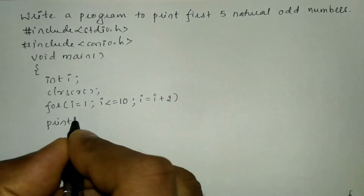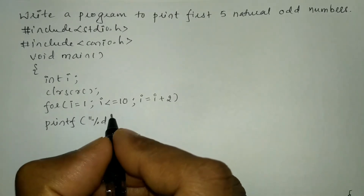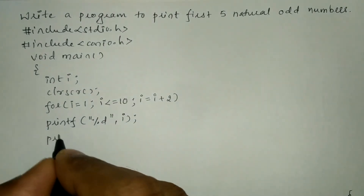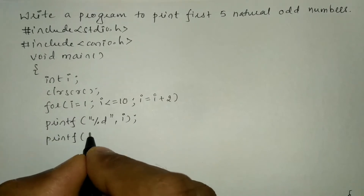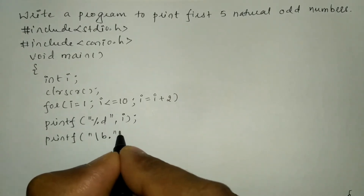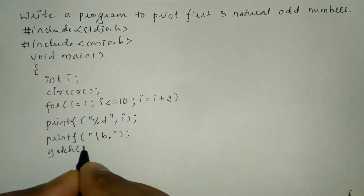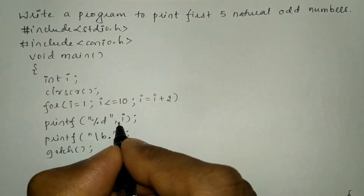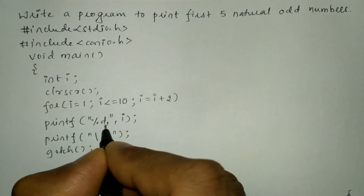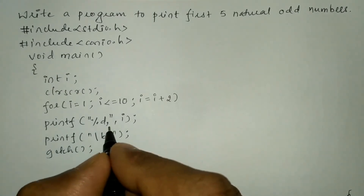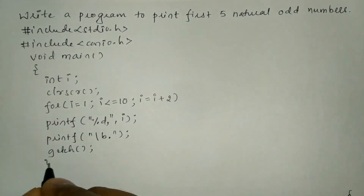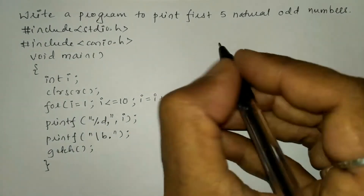Next I'm going to write a printf statement. In double quotation marks write the percentage d format specifier, end the double quotation mark, put a comma, and print the value of i. I'll write one more printf statement that executes only once — in double quotation marks write backslash b and then a full stop, end the double quotation mark, and put a semicolon. Also put a comma before this double quotation mark so that each odd number is separated.